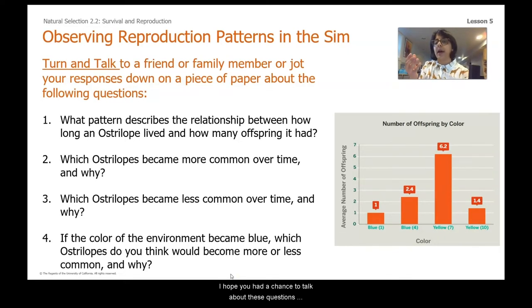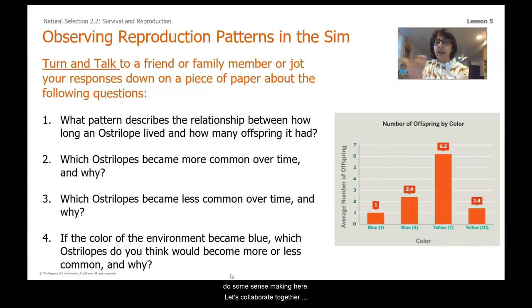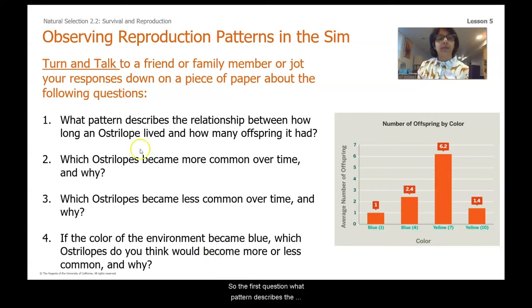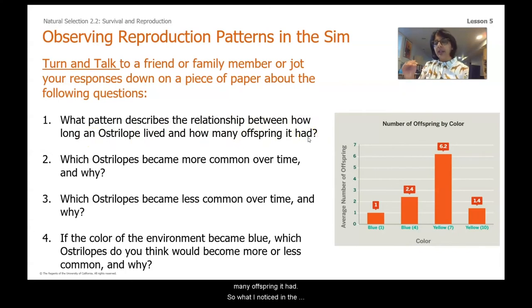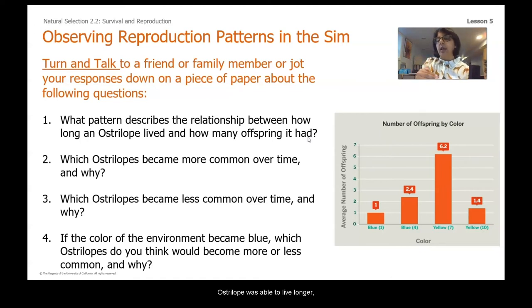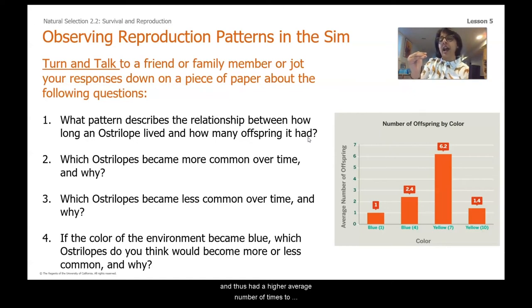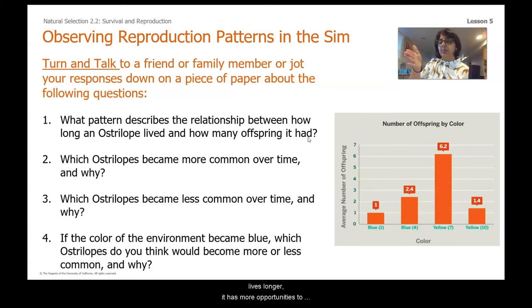I hope you had a chance to talk about these questions with someone because it's so important as scientists to collaborate and do some sense making. Let's collaborate together now. The first question — what pattern describes the relationship between how long an australobe lived and how many offspring it had? When an australobe was able to live longer, it had more time and more opportunity to reproduce, and thus had a higher average number of offspring. When the australobe lives longer, it has more opportunities to reproduce.